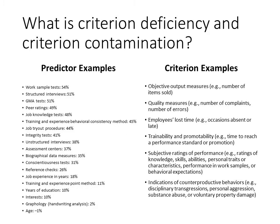Here's a list of examples of predictors and criteria — I highly recommend that you save this slide. IO psychologists might measure the quantity or the quality of output. They can look at things like lost time due to tardiness or absenteeism. They can look at trainability and promotability — for instance, how long it takes someone to learn a new skill, or how willing they are to learn that skill. They can also use subjective ratings of performance, and they might focus on counterproductive work behaviors as opposed to desirable behaviors.